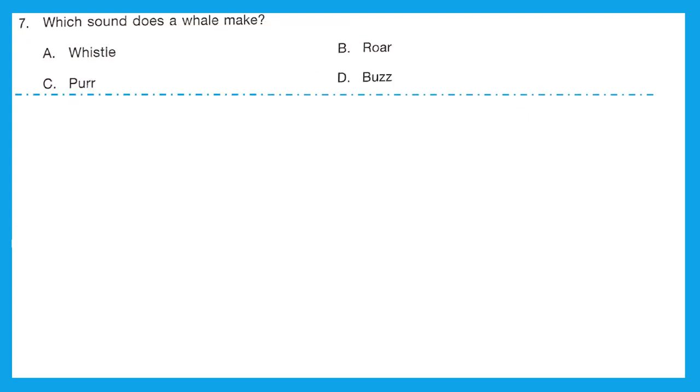Question 7, which sound does a whale make? Is it whistle, roar, purr or buzz? Bee buzzes, cat purrs, lion roars, and whale whistles. The right answer is option A, whistle.